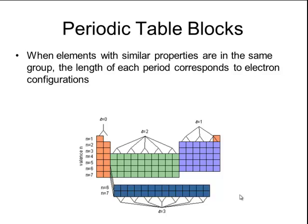We learned in the previous screencast that the elements of the periodic table are organized according to increasing atomic number, so that elements with similar properties are in the same vertical column or group. What's interesting is that when you do this, the length of each period corresponds to their electron configurations.